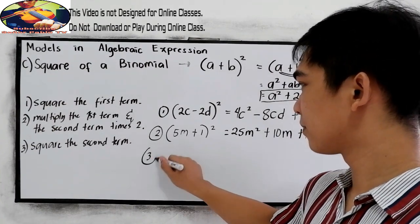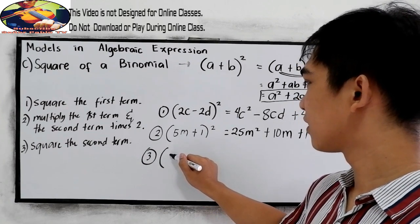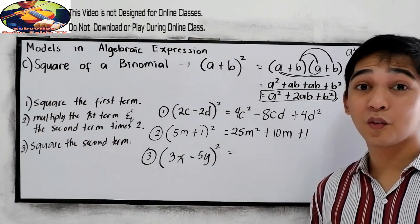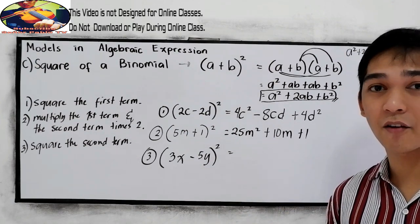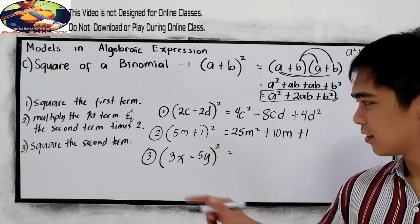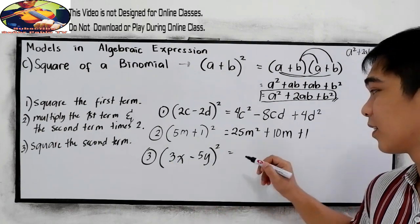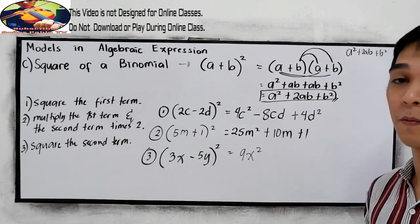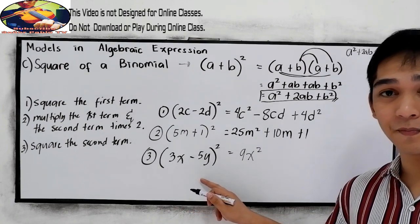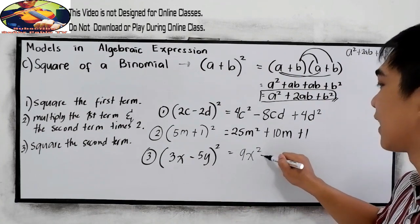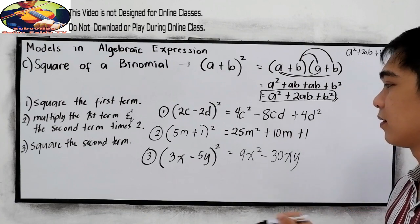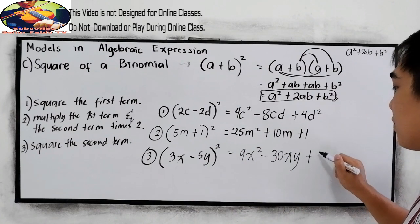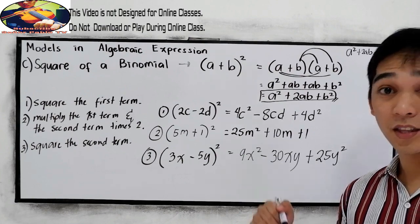Now give it a try — number three: 3x minus 5y, raised to 2. Pause the video, answer, then resume to check. Square the first term: 9x². Multiply the first term and the second term: negative 15xy times 2 is negative 30xy. Then square the second term: negative 5y times negative 5y is positive 25y². Did you get the same answer? Very good.